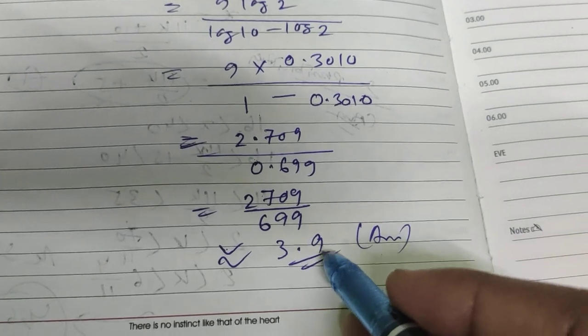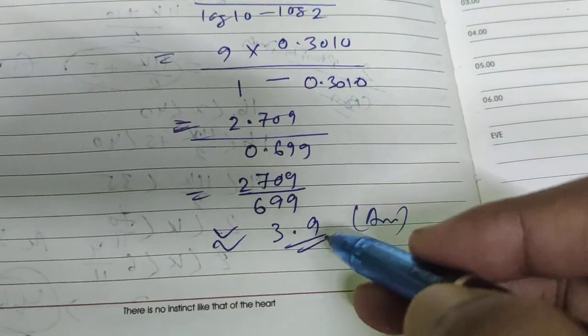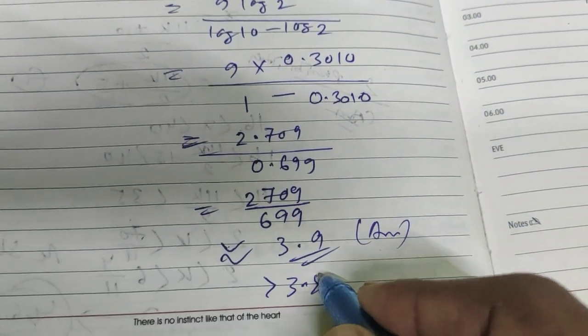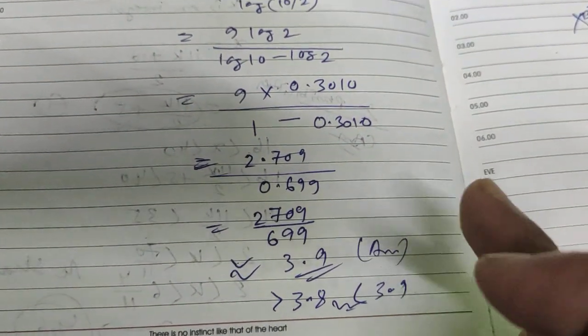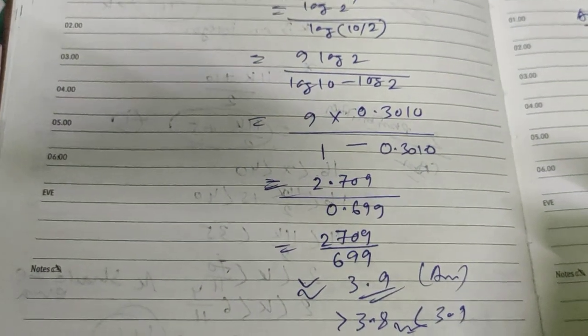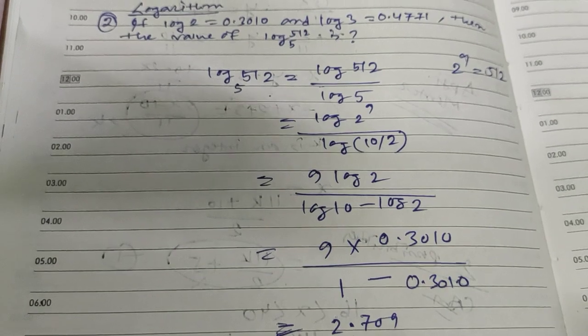The answer will be slightly less than 3.9, so consider something greater than 3.8 and less than 3.9. That option should be there. If you have any other questions, you can comment below.